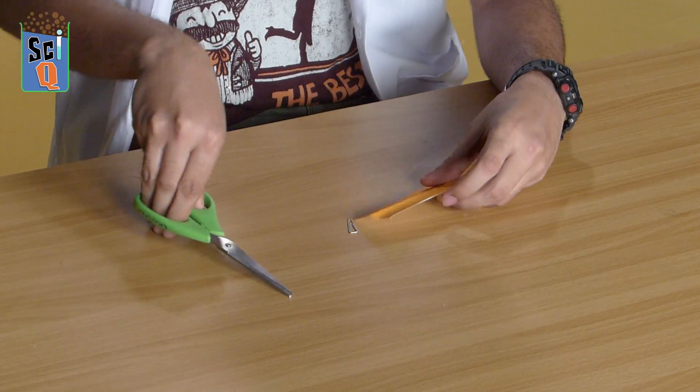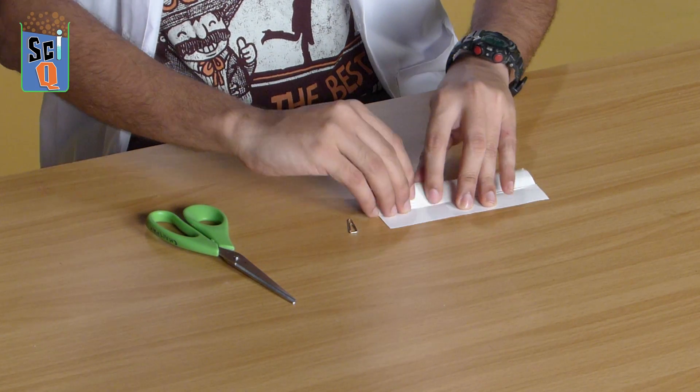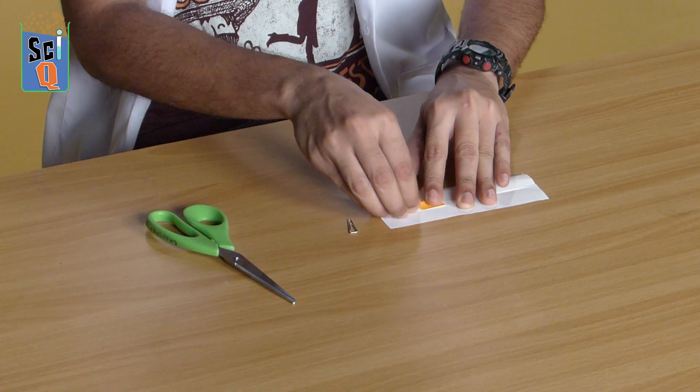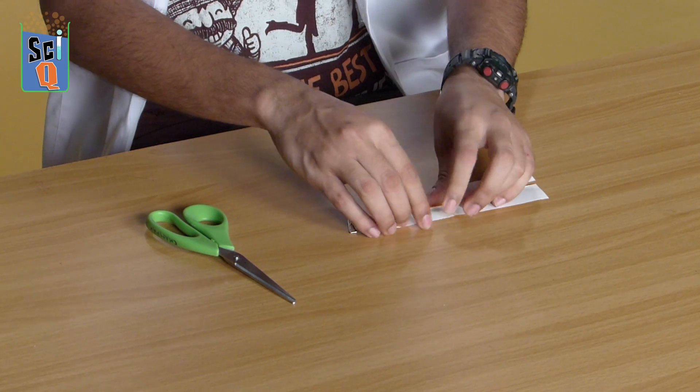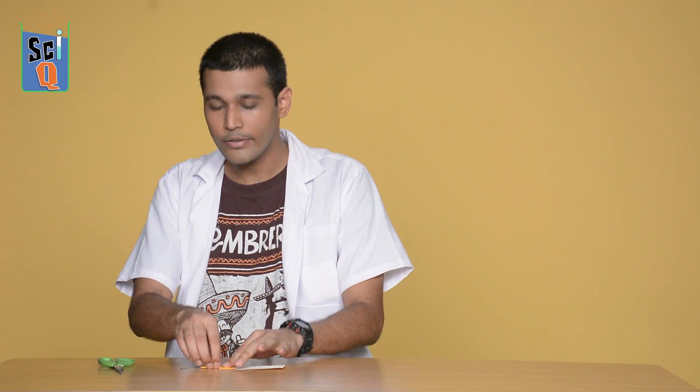Once that's done, we flip it over and we fold it almost to the center. Fold the other side as well and the handle of our rotocopter is ready. Now let's work on the wings.